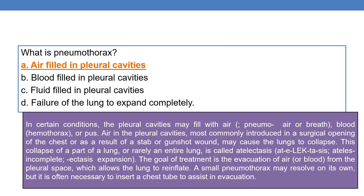What is pneumothorax? Pneumo means air or breath, and thorax means chest. So pneumothorax is air filled in the pleural cavities. In certain conditions the pleural cavities may fill with air — that condition is called pneumothorax. If blood is filled in the pleural cavities, the condition is called hemothorax.